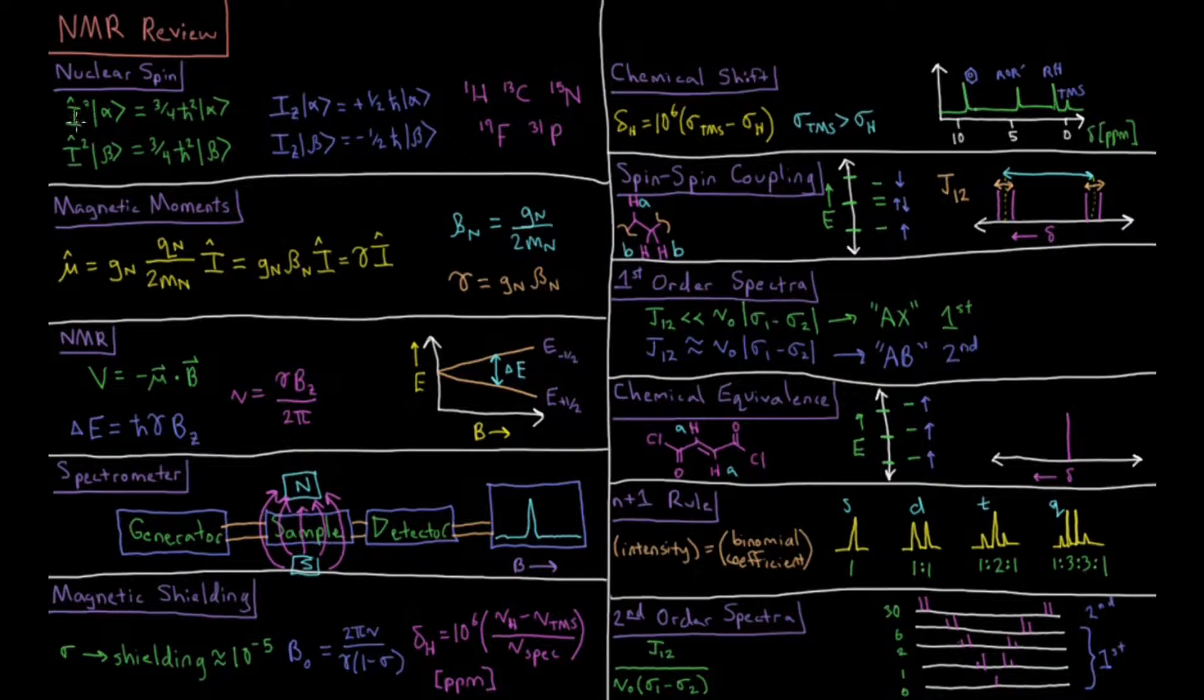We have the nuclear spin operators for the spin angular momentum squared I squared and the Z component of that operator. For acting on alpha and beta, I squared gives the same eigenvalue, three-fourths h-bar squared times alpha and times beta. And then the Z component distinguishes spin up and spin down for the nucleus, plus or minus one-half h-bar alpha or beta.